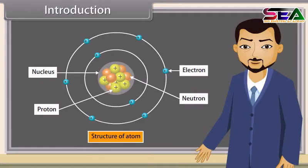Good question, Rakesh. As you know, all objects are made up of different materials like plastic, rubber, iron, etc. They have different arrangements and types of molecules. A molecule is a group of two or more atoms. So the fundamental unit is the atom.